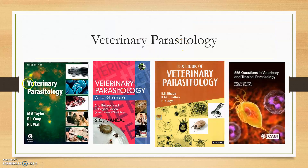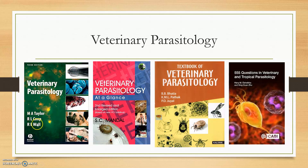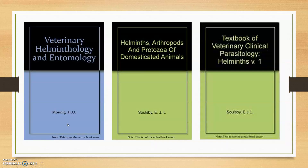For veterinary parasitology, M.A. Taylor and S.C. Mandal are the best books. S.C. Mandal explains everything in a very simple fashion. B.B. Bhatia (Kalyani Publishers) is also very good — it may not have many colorful figures but the content is very clear. M.A. Taylor and R.L. Coop are best for classification of parasites. E.J. Soulsby's book covering Protozoa and Helminths is also a very good clinical parasitology reference.